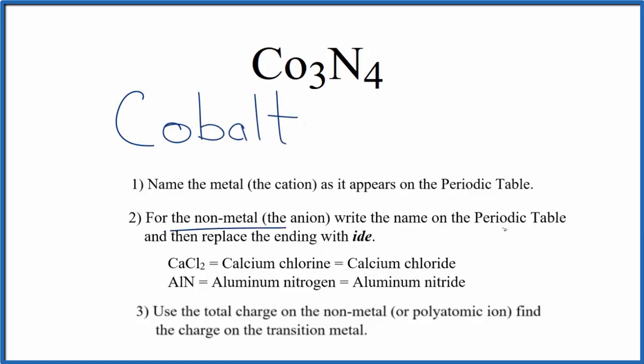Next, we write the name for the non-metal as it appears on the periodic table. So N, that's nitrogen, and we're going to cross the ending out - this O, G, E, N - and replace it with I, D, E.